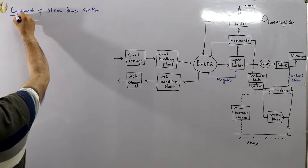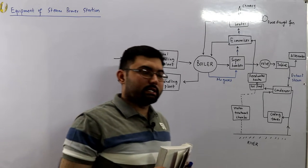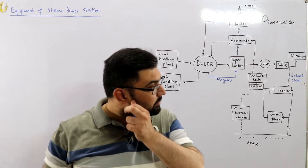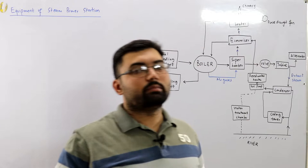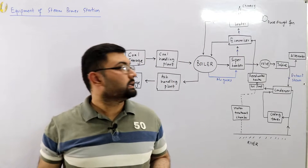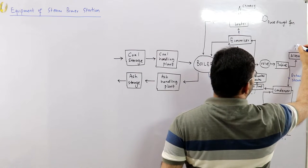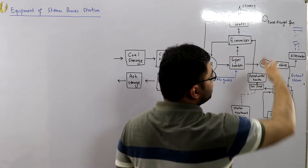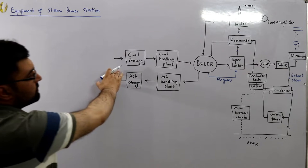In the steam power station, we are converting thermal energy into electrical energy by means of coal combustion. We utilize the heat energy of coal combustion to convert water into steam. That steam then rotates the turbine blades, and the turbine is mechanically coupled to an alternator which converts it into electrical energy. From the alternator, through transformers, isolators, and bus bars, the electricity has finally been produced.